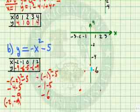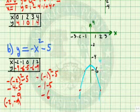So once again, if I complete the graph, this one's an upside-down parabola. We'll write y=-x²-5.